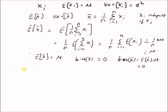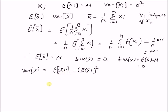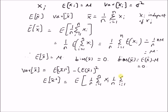Now we want to calculate the variance of X-bar, that is the sample mean, which by definition is equal to expectation of X-bar squared minus the square of expectation of X-bar. We already derived the expectation of X-bar. Now we only need to find the second moment of X-bar, that is expectation of X-bar squared, which is equal to the expectation of (1/n times summation i=1 to n of X_i) multiplied by (1/n times summation j=1 to n of X_j).